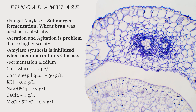Production of fungal amylase: The method of submerged fermentation is used and wheat bran is used as a substrate. Aeration and agitation is a problem due to high viscosity. In this medium, when glucose is present, the synthesis of amylase will be inhibited. Fermentation medium contains corn starch 24g per litre, corn steep liquor 36g per litre, potassium chloride 0.2g per litre, sodium hydrogen phosphate 47g per litre, and calcium chloride 1g per litre.